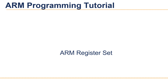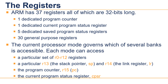Hello, this is Lakshmika Tiwari. In this tutorial we will discuss the ARM register set. The ARM architecture provides a total of 37 registers including all general purpose and the special function registers, all of which are 32 bits long.